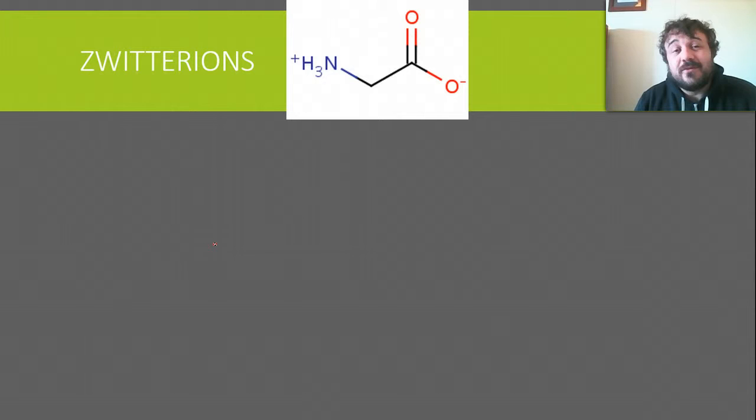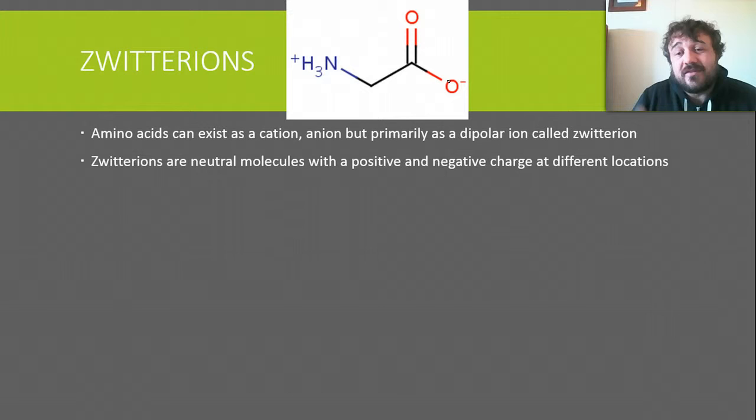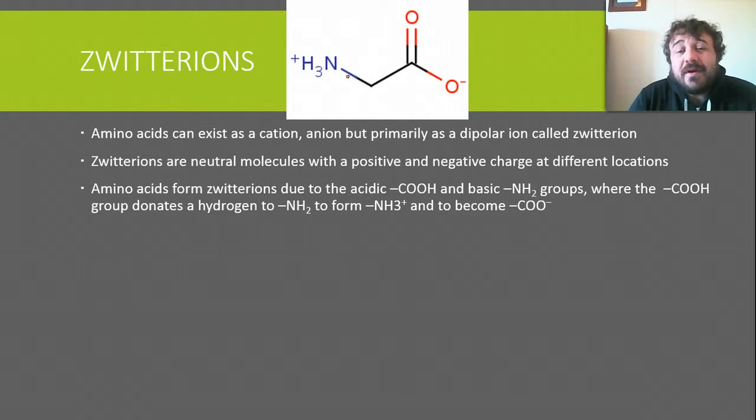So, what's a zwitterion? Zwitterions are cool. Amino acids tend to be zwitterions — they can be a cation and an anion, but generally they exist as a zwitterion, which means it has a positive end and a negative end and is overall dipolar. Zwitterions are neutral molecules with a positive and negative charge at different locations, so the overall charge is zero.